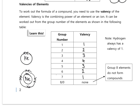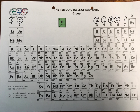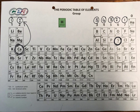One last thing to note: hydrogen doesn't really belong to a particular group but always has a valency of one. So label your groups with their valencies — 1, 2, 3, 4, 3, 2, 1 — and you can identify the valency of any element by finding its group. For example, calcium is in group two so it has a valency of two; sulfur is in group six but has a valency of two.